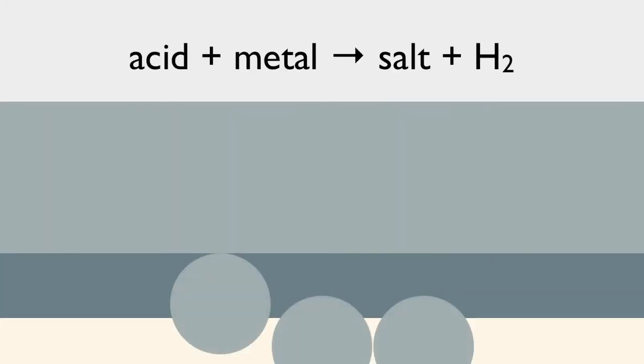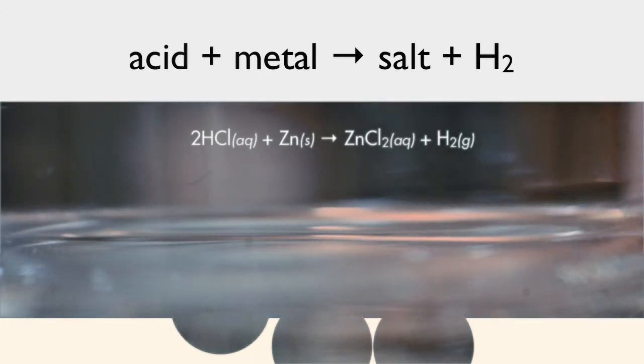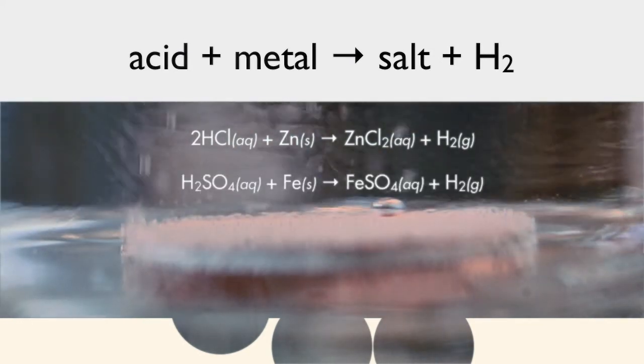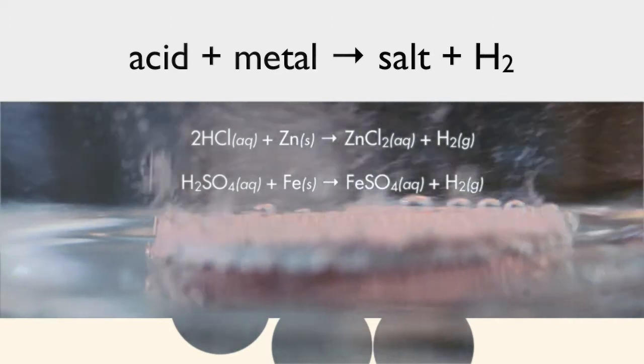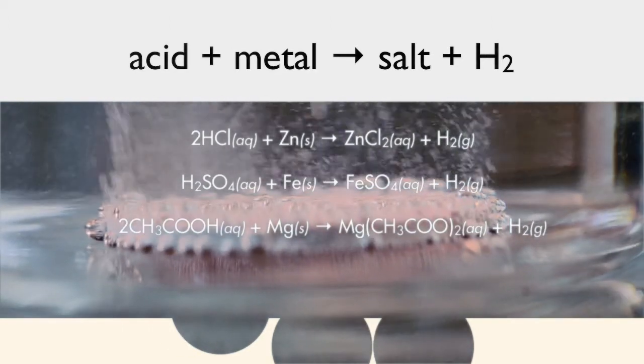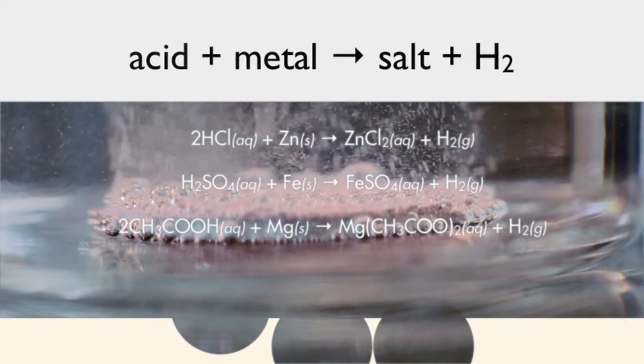First, we'll look at when we mix an acid and a metal, and we're going to get salt and hydrogen gas. The first example is hydrochloric acid with zinc, which makes zinc chloride and hydrogen gas. We can also do this with sulfuric acid and iron, and acetic acid and magnesium. Now, acetic acid is also called ethanoic acid.